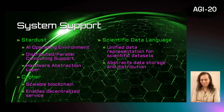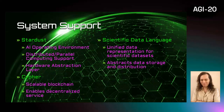We designed system support components for a decentralized heterogeneous peer-to-peer parallel computing substrate. Sardust is a virtual machine that provides a standard AI operating environment and parallel distributed computing primitives, acting as a hardware abstraction layer. Cypher is a scalable blockchain that enables decentralized operation and finance. Scientific data language is a unified data representation for data sets, serving abstract data storage and distribution.